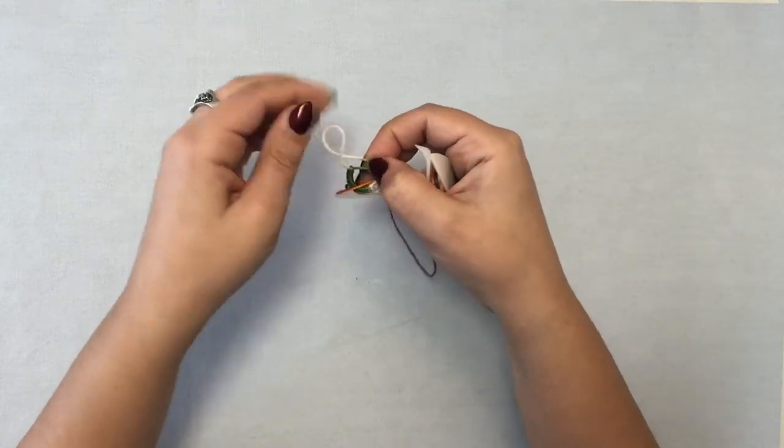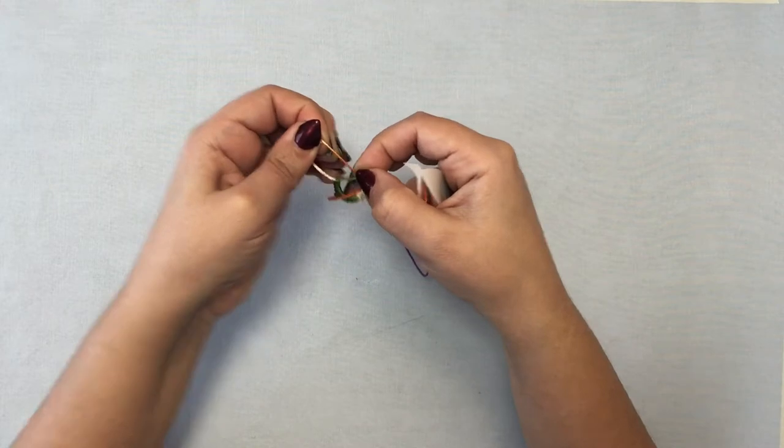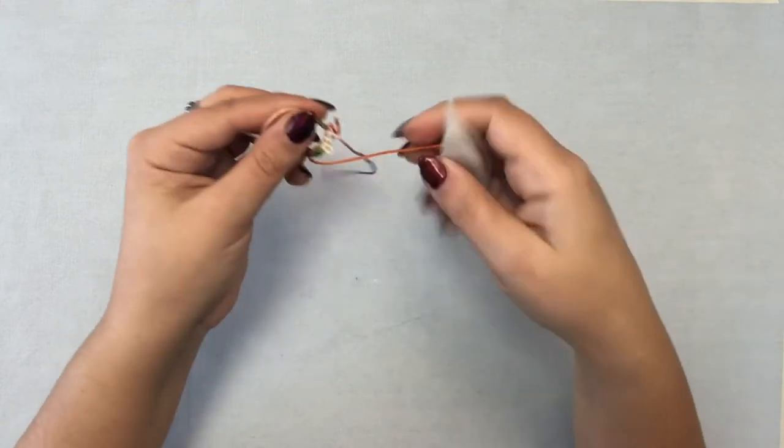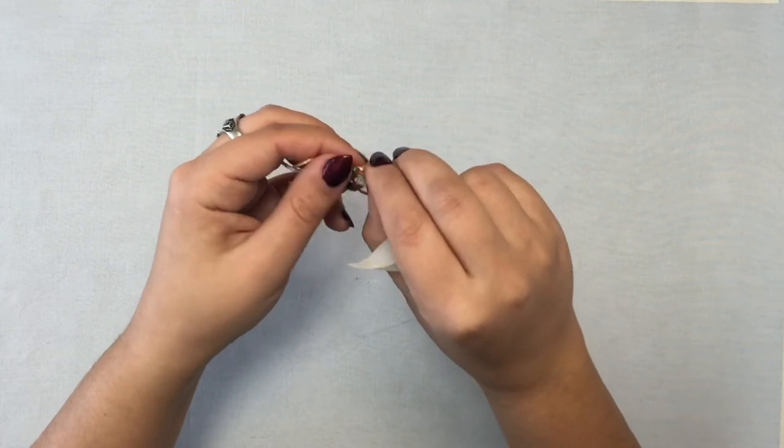So just work it back loose until you can continue pulling your shuttle thread up and again if you get a knot just loosen it back up.